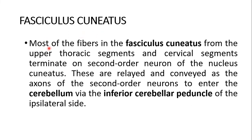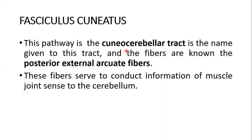Most of the fibers in the fasciculus cuneatus from upper thoracic and cervical segments terminate on second-order neurons of the nucleus cuneatus. These are relayed and conveyed via the axons of the second-order neurons to enter the cerebellum via the inferior cerebellar peduncle of the ipsilateral side. This pathway is called the cuneocerebellar tract, and the fibers are known as the posterior external arcuate fibers — distinct from the internal arcuate fibers discussed earlier. These fibers conduct information of muscle joint sense to the cerebellum.